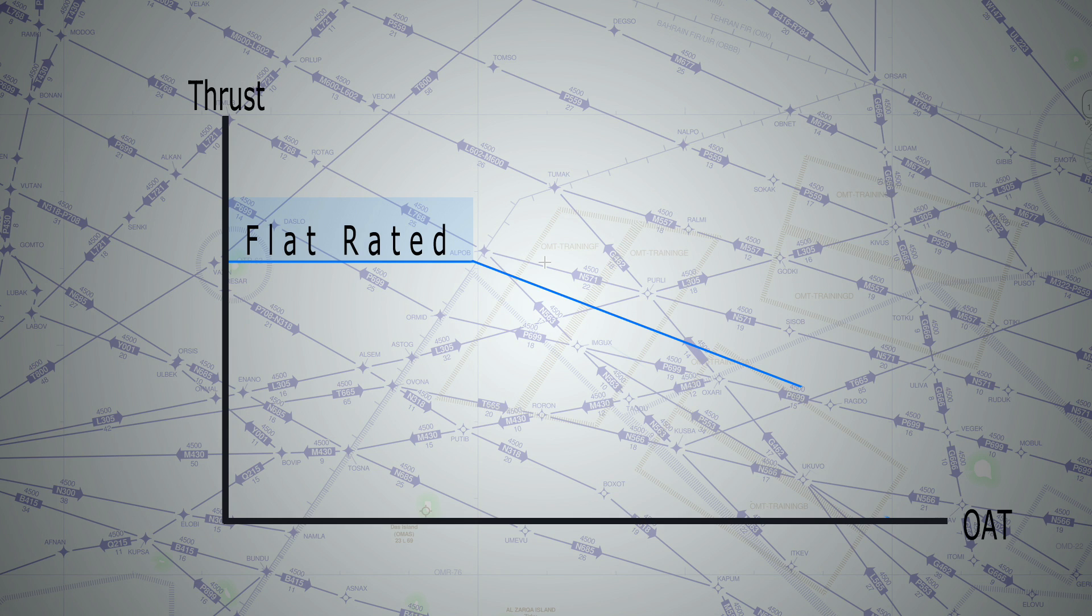And that is for mechanical limitation reasons such as EGT limit and compression ratio. So below a certain temperature and certain density, the engine will produce the same amount of thrust regardless of the outside air temperature. We call that a flat rated engine and it is represented on this graph by the horizontal portion over here.